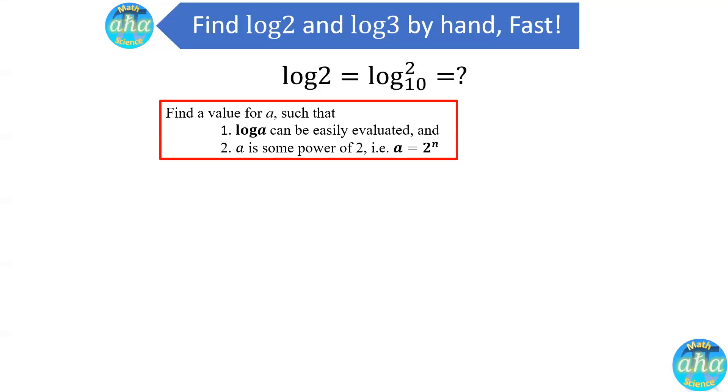So what do we mean by easily evaluated? Let's take a look at log of 10. Log of 10 is just equal to 1 because 10 is 10 to the power of 1. What about log of 100? 100 is 10 to the power of 2, so log of 100 is equal to 2. And then we can continue and look at log of 1,000. Since 1,000 is 10 to the power of 3, log of 1,000 is just equal to 3.